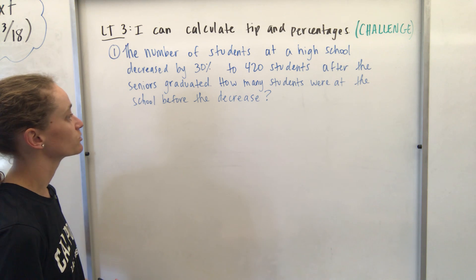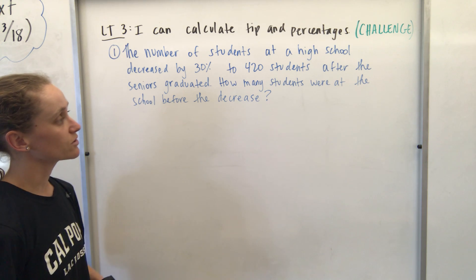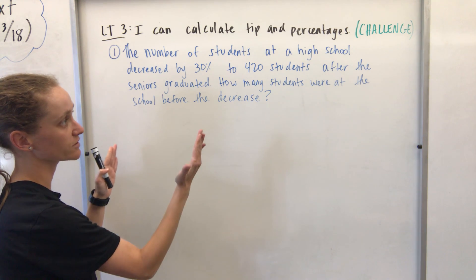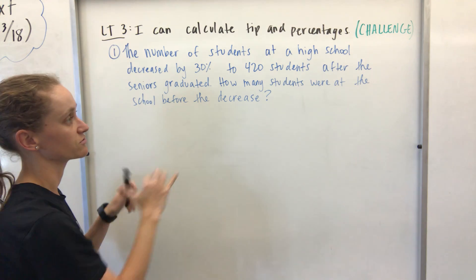How many students were at the school before the decrease? So it seems like there was some number of students at the school and then there was a 30% decrease and 420 was how many students were left.